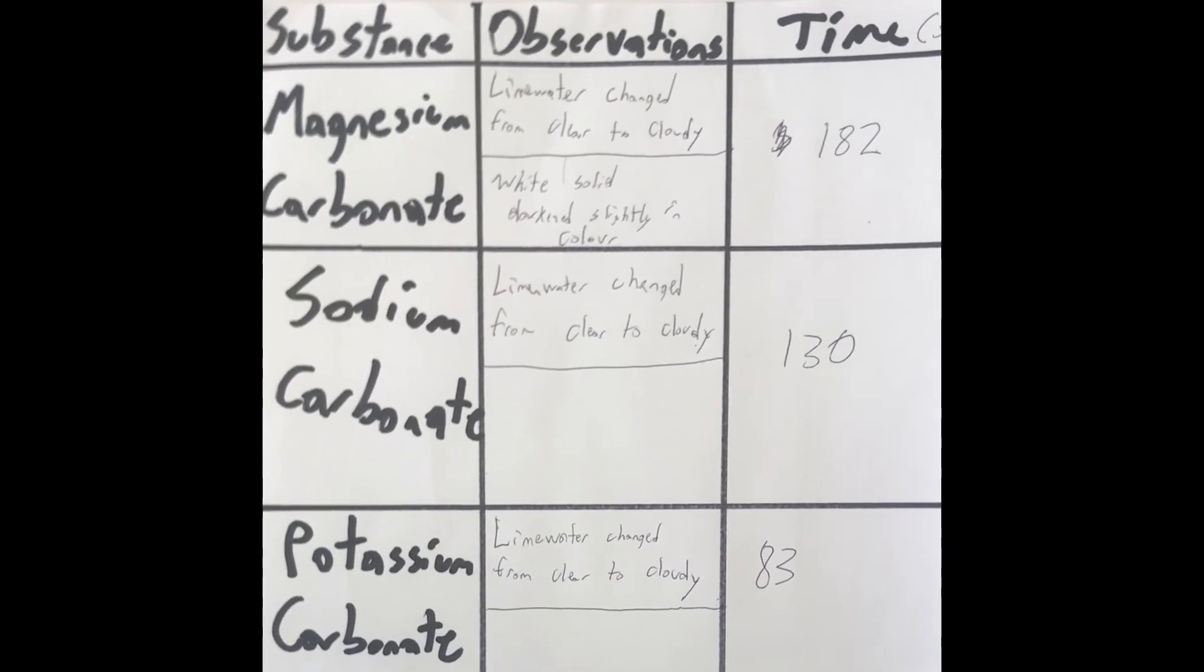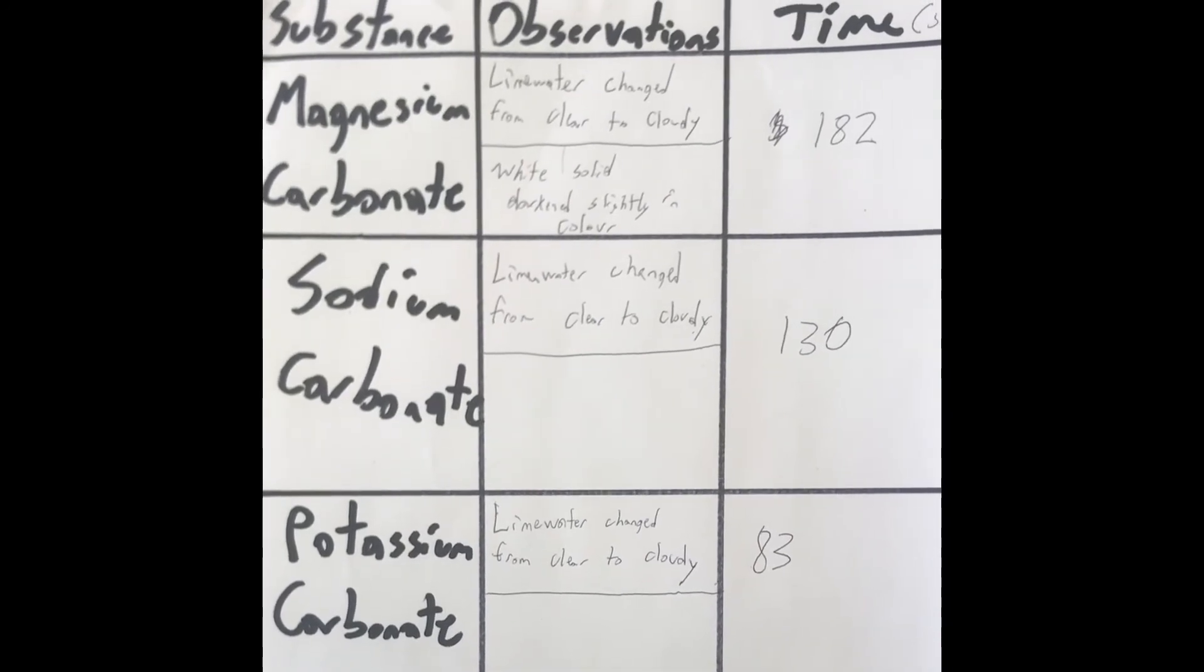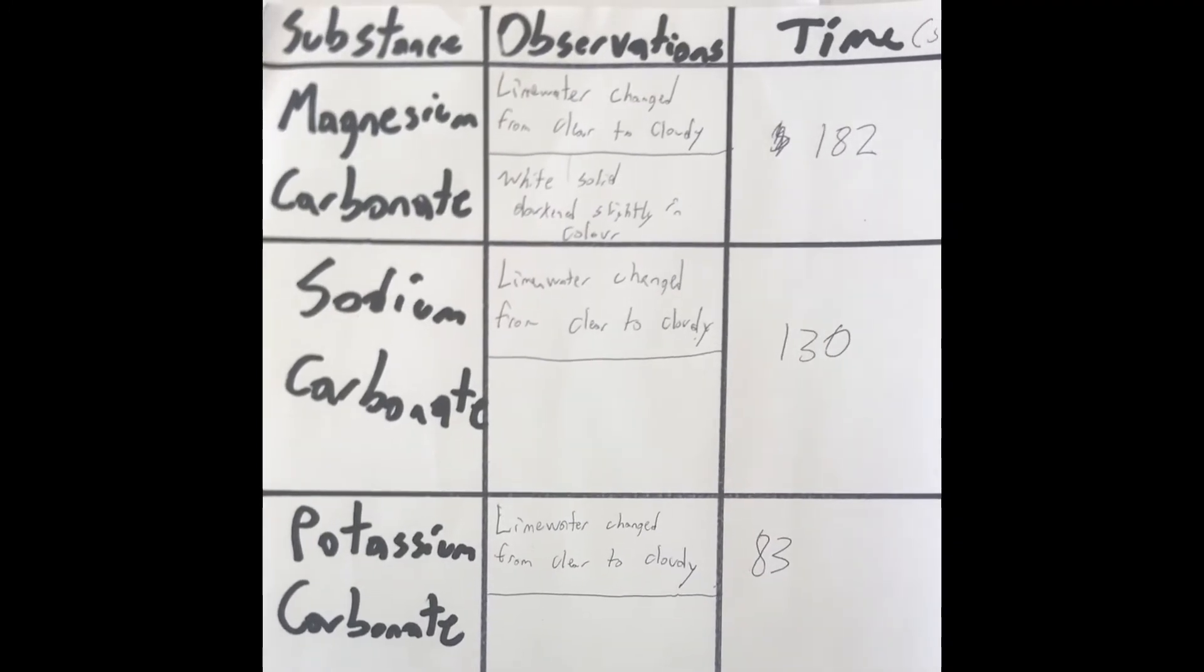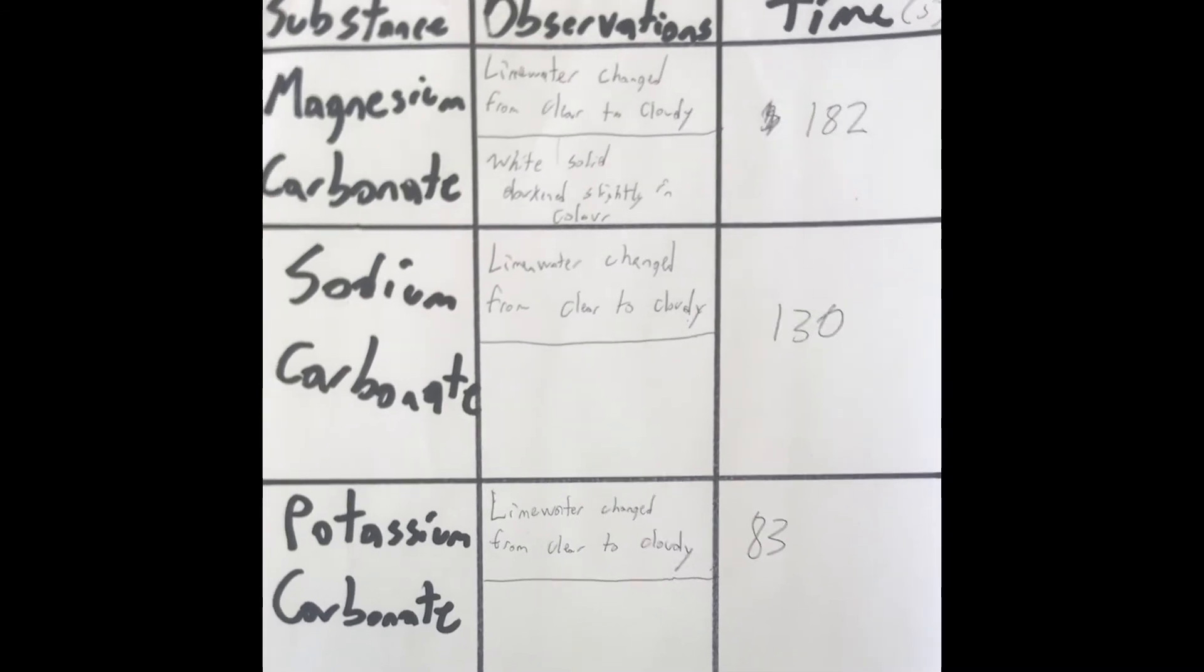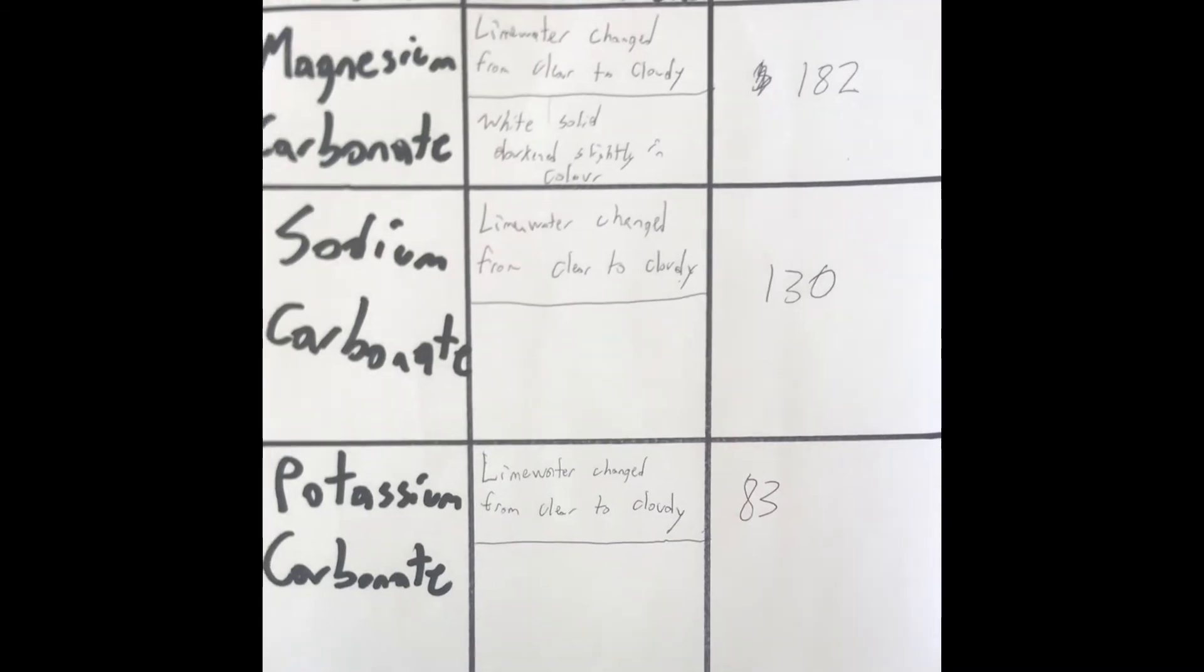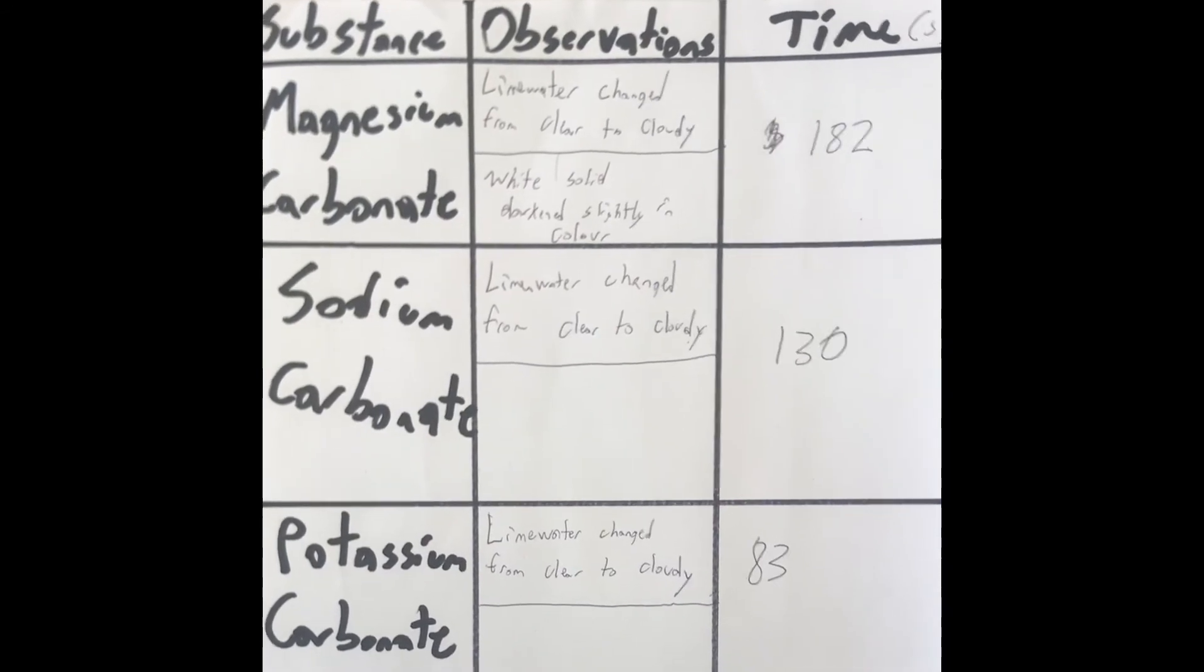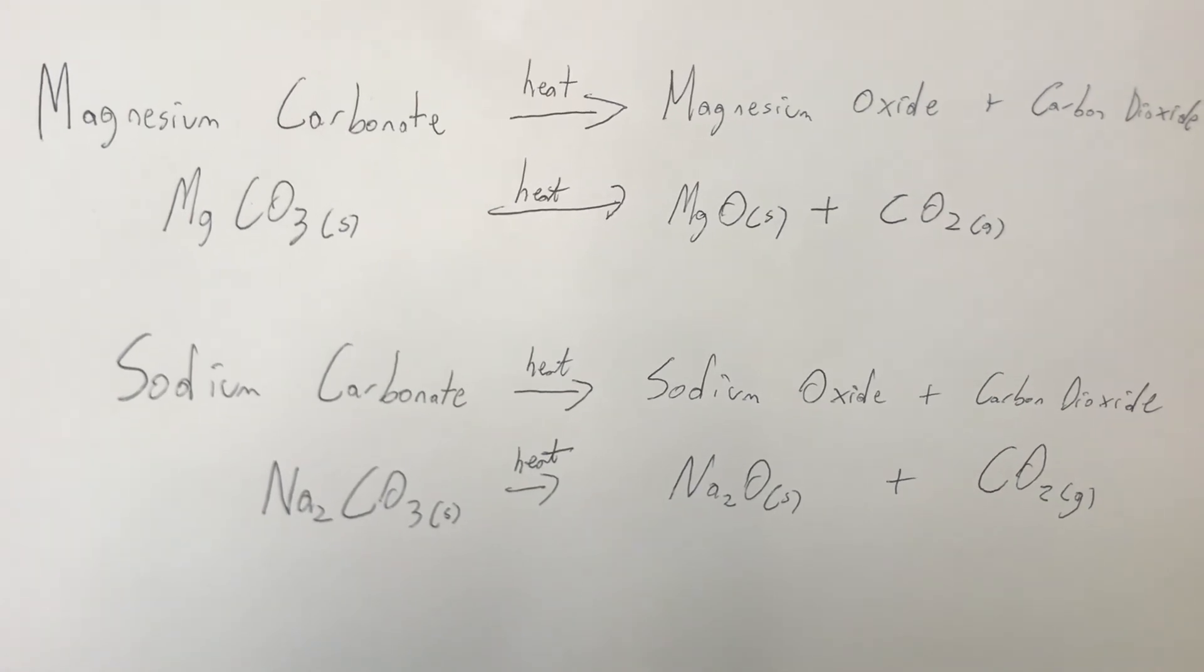To compare the thermal decomposition reactions of all three metal carbonates, I used a timer to determine the amount of time it would take for the lime water to turn cloudy. Magnesium carbonate took 182 seconds, sodium carbonate 130 seconds, and potassium carbonate 83 seconds. So the thermal decomposition of potassium carbonate is the fastest reaction of these three.